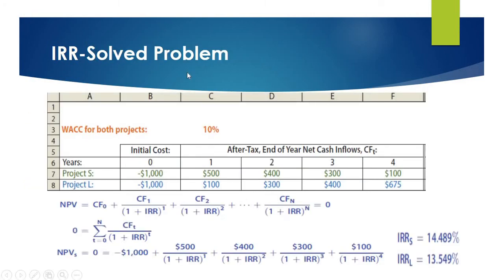Here is a mathematical solution of IRR. There are two projects here: Project S and Project L. The weighted average cost of capital for both projects is 10%.